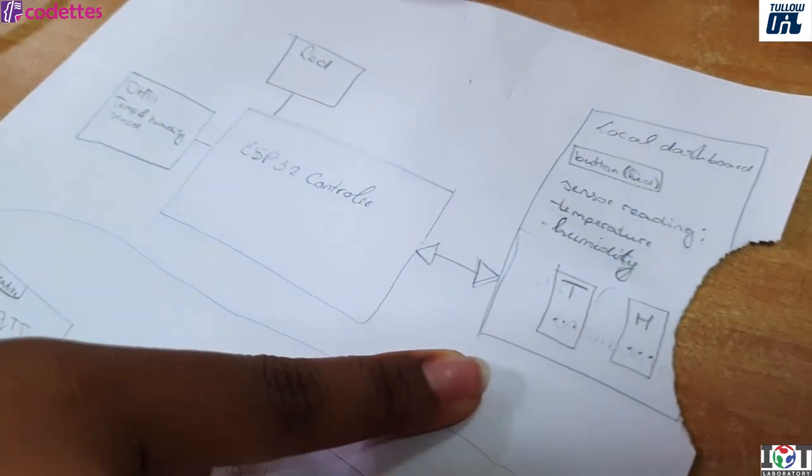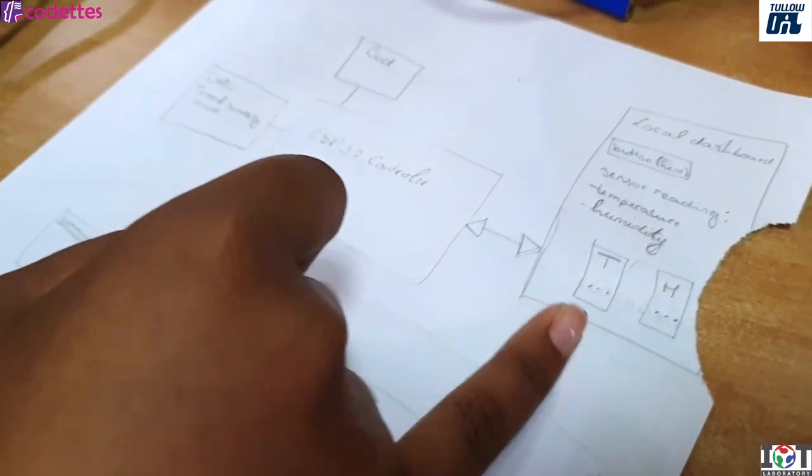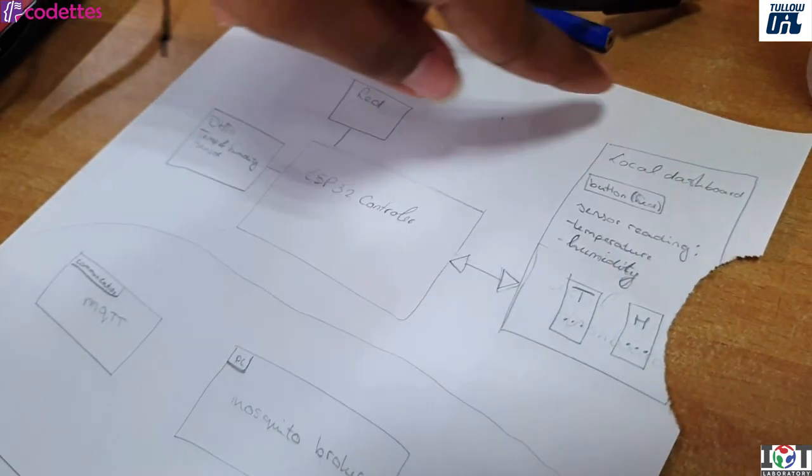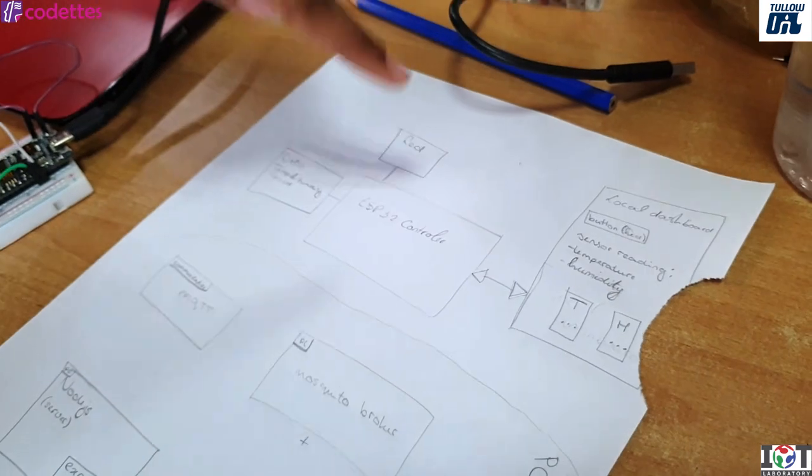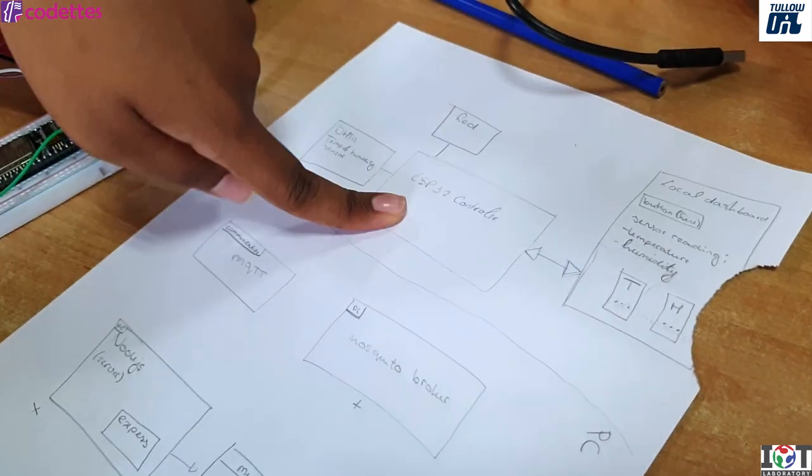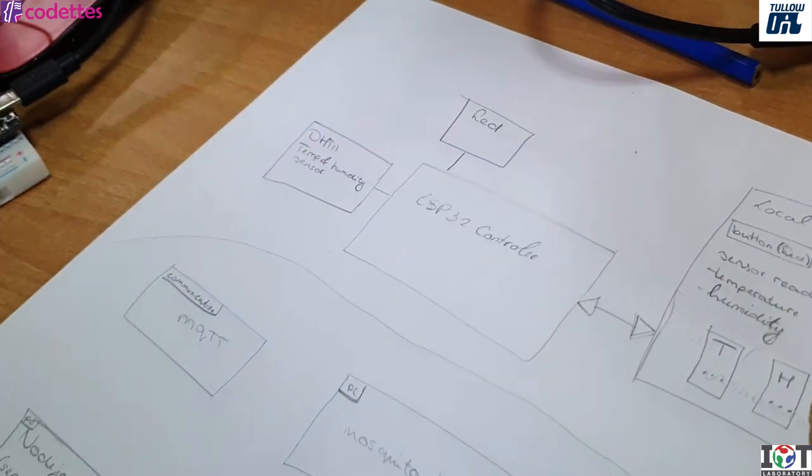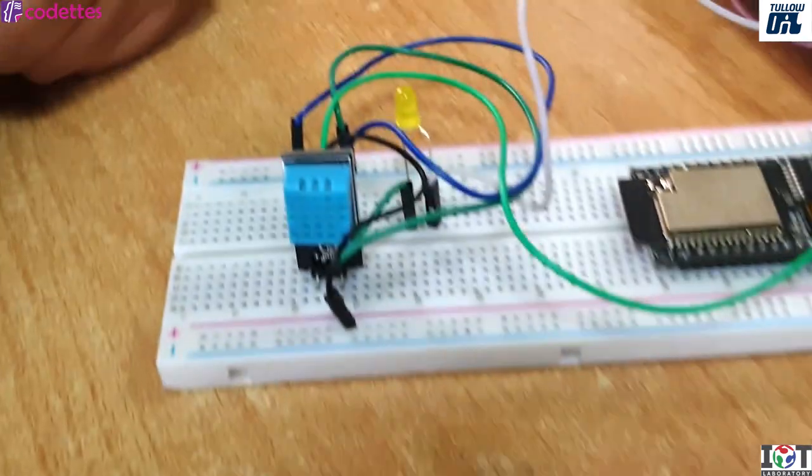And then it goes to my dashboard in which it will be displayed. But what it also does is I have a button here, and when I press it, it will send the information or a signal to my controller, which will then turn on the LED or off.